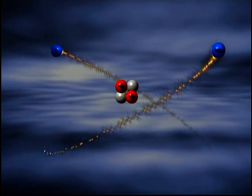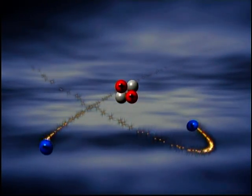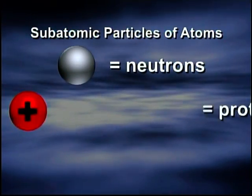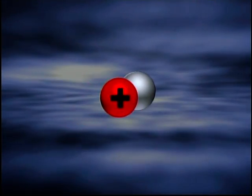All atoms contain three types of subatomic particles that are of interest to you in electricity: neutrons, protons, and electrons.